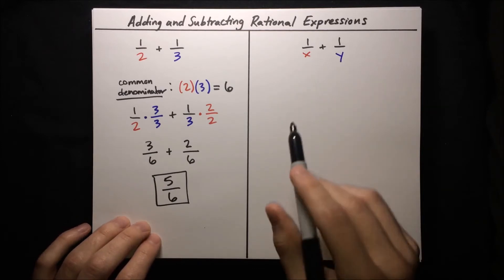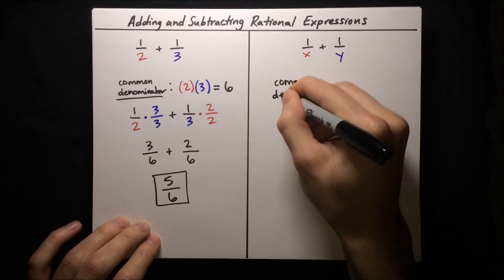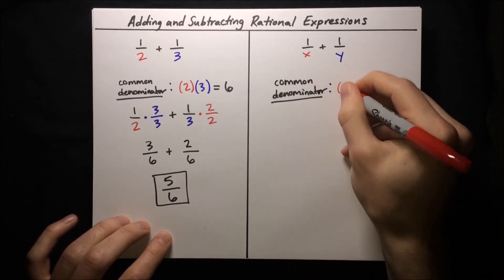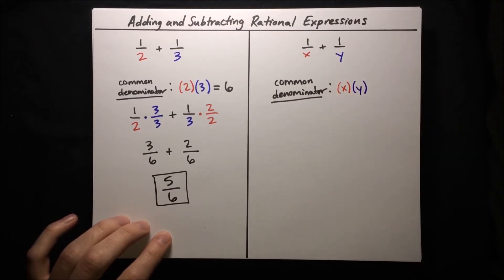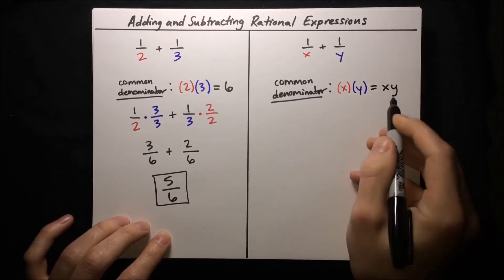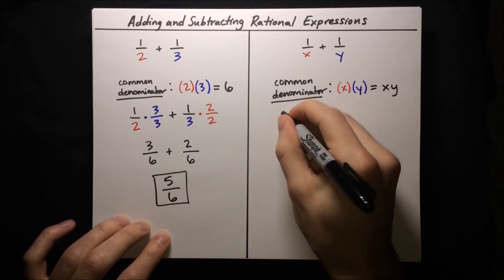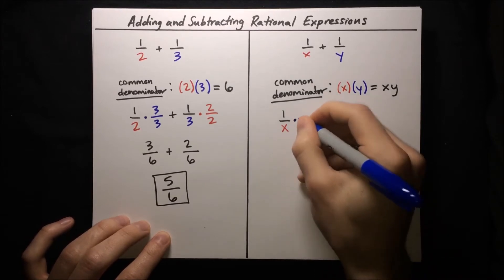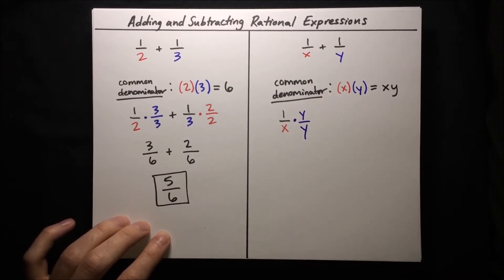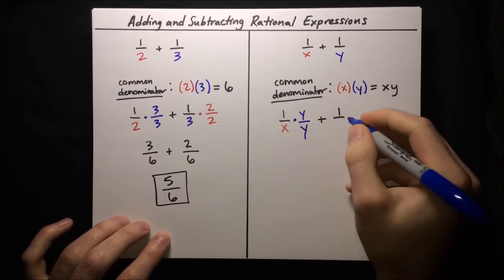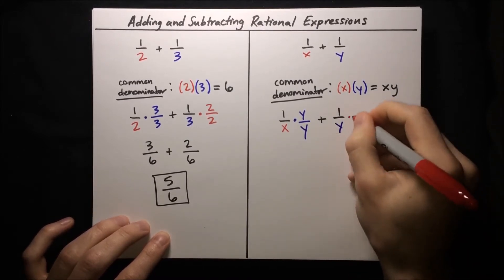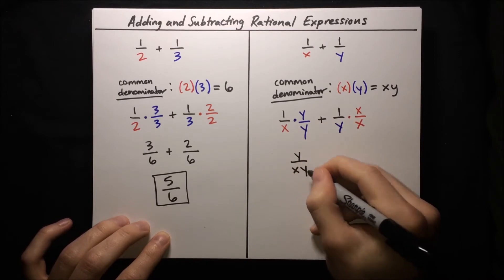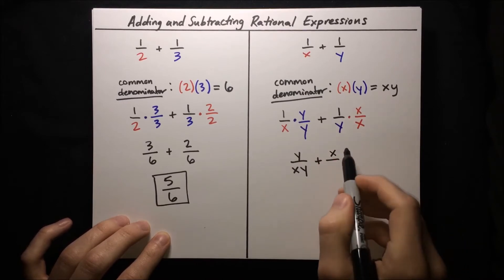When we have variables, it works the same way. We start off by finding a common denominator. The easiest way to do this is to just multiply the denominators, so we'll take x times y — that's just xy — and that's our common denominator. Then we'll convert each fraction into an equivalent form with denominator xy. Starting with 1 over x, we multiply top and bottom by y. Then for 1 over y, we multiply top and bottom by x. So we get y over xy plus x over xy.